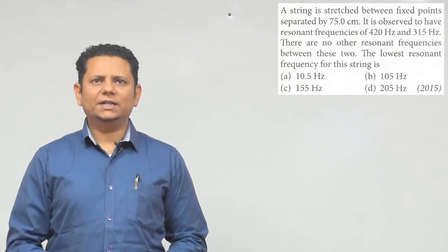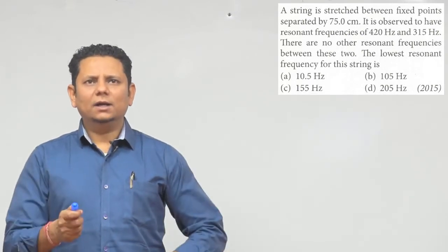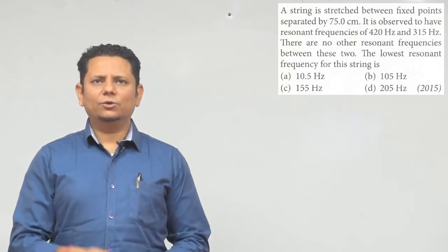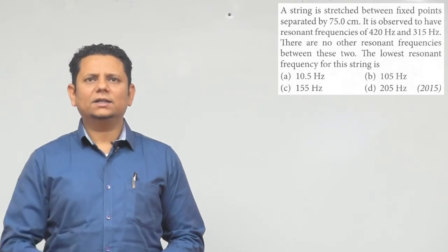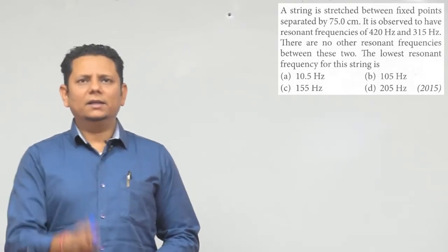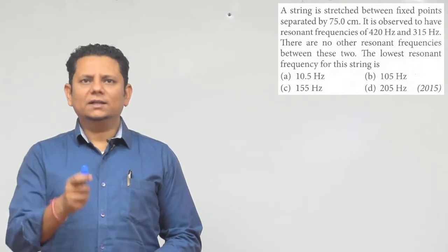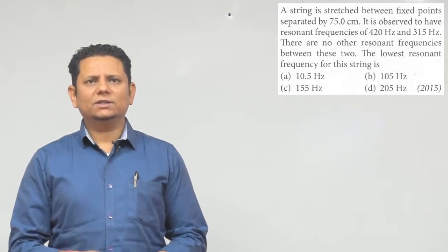Next question: A string is stretched between fixed points separated by 75 centimeters. It is observed to have resonant frequencies of 420 Hz and 315 Hz. There are no resonant frequencies between these two. What is the lowest resonant frequency of the string?